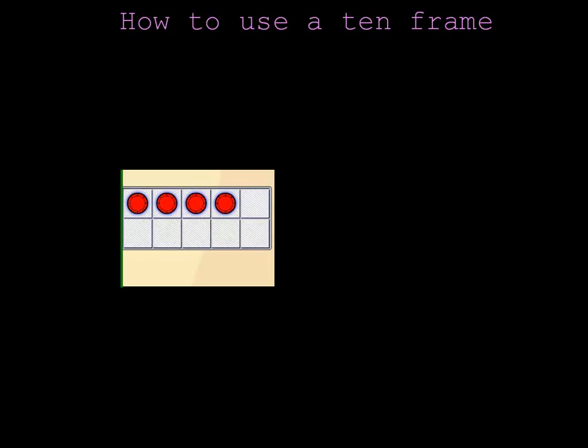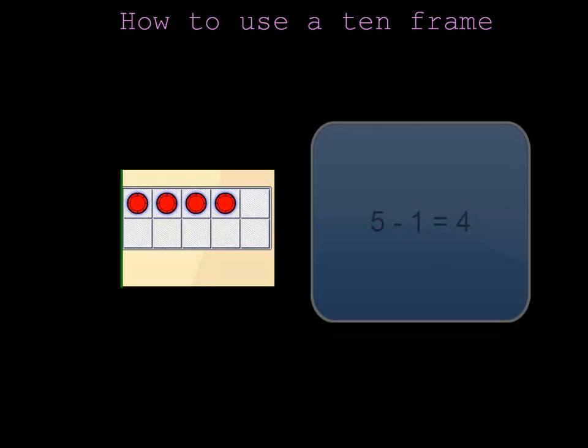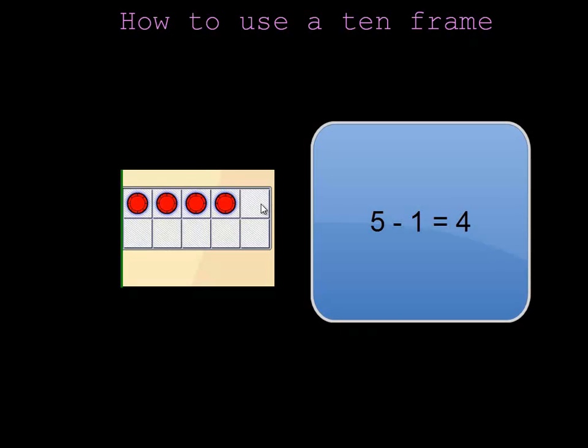This 10 frame has 4 chips in it. I can see that without counting because I can see that one row is almost full and I know that one row of the 10 frame has 5. If there is one empty block in a row, then there must be 4 chips in that row because 5 minus 1 is 4.